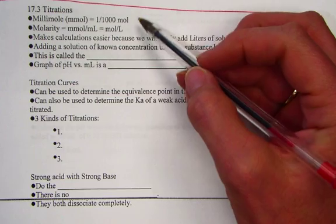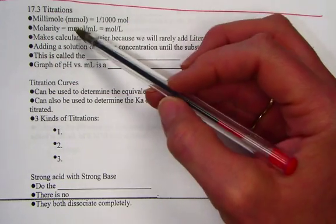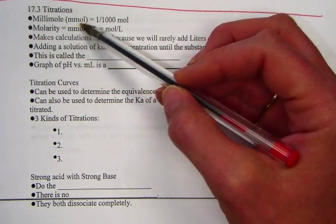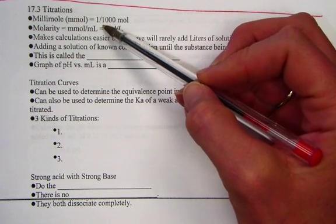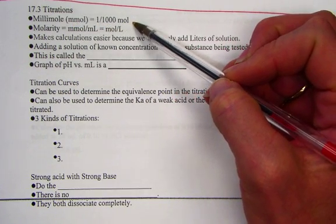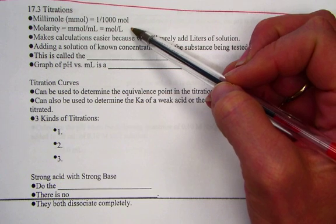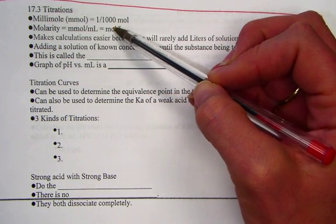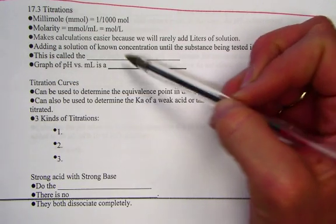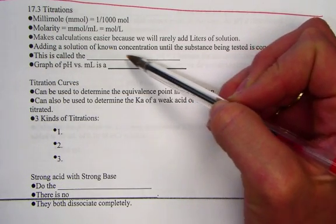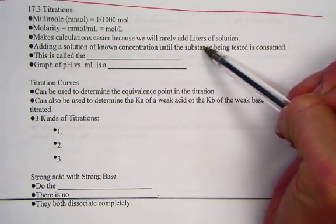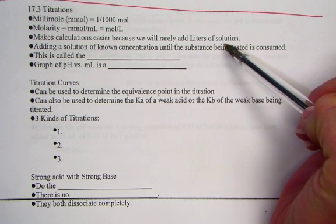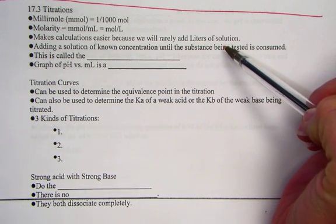A couple of handy things our note pack begins by explaining is the term millimole. Mmol for a millimole is one thousandth of a mole. Oftentimes, chemists who work in small amounts prefer millimoles over milliliters instead of the usual mole per liter. Since the calculations then are made easier, we rarely add liters of solution through a titration. More often, we add milliliters.